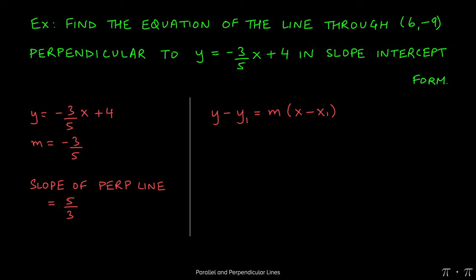We can start with using the point-slope form, y - y₁, which will be -9, equals m, which is 5/3, times the quantity x - x₁, which is 6.